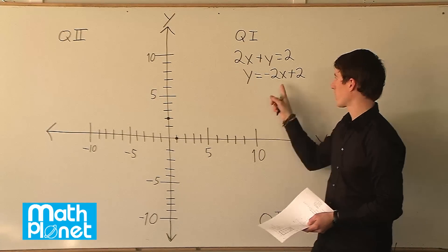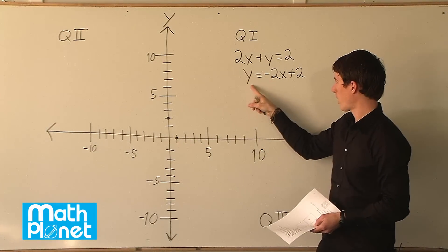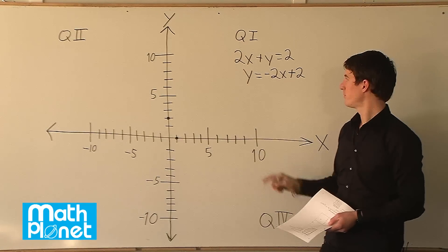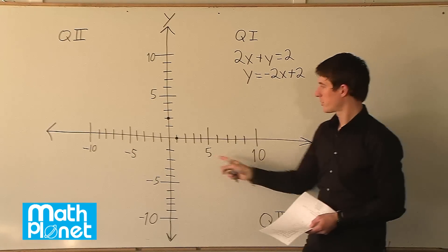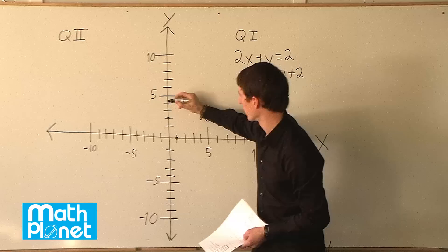So for example we plug in x is equal to negative 1. Then we're going to get y is equal to negative 1 times negative 2 which is positive 2, and then we just get y equals 2 plus 2 which is 4. So if we had x is equal to negative 1 we'd have y is equal to 4.